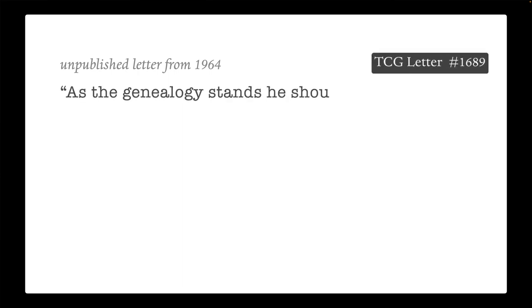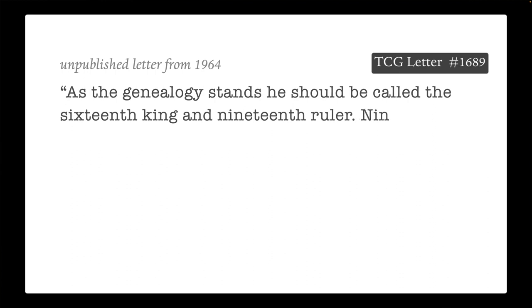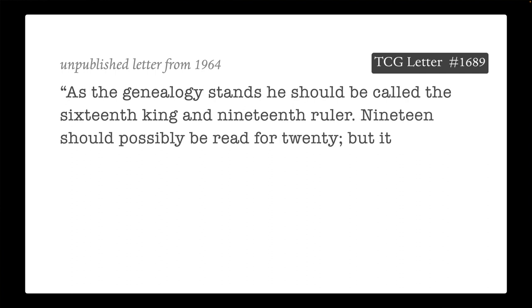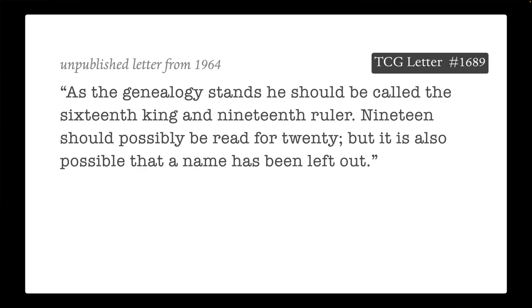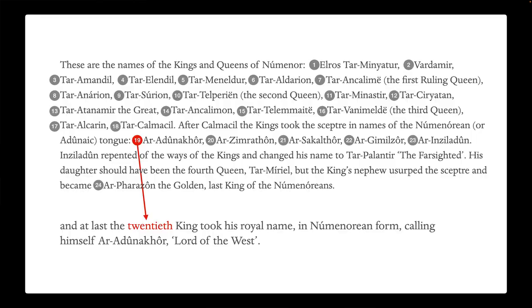A reader wrote to Tolkien in 1964 pointing out the inconsistency, and in an unpublished letter Tolkien responded: 'As the genealogy stands he should be called the 16th king and 19th ruler. 19 should possibly be read for 20. But it is also possible that a name has been left out.' Tolkien apparently went on to explain that he didn't have his papers on the matter at hand and so couldn't confirm either way. But he does seem to rule out having done it deliberately, and he left open the possibility of whether the list or the later paragraph is correct.